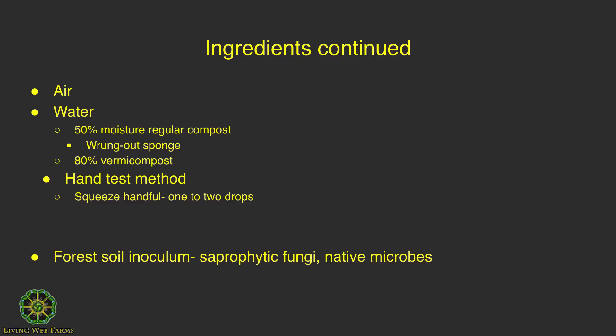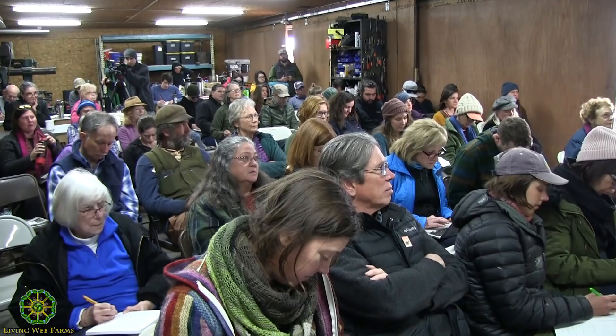Moving on with ingredients: some of the most important things on top of the actual ingredients are air and water. You want your compost to resemble a wrung-out sponge — at about 50 percent moisture. There's a hand test method where you reach in, grab a handful of material, and squeeze it: if water comes out from between your fingers or you get one or two drops out the bottom, that's about 50 percent moisture.